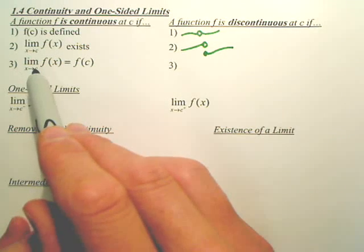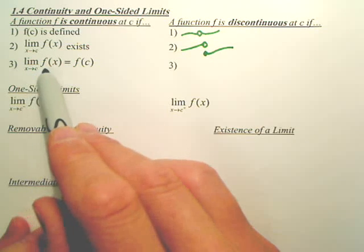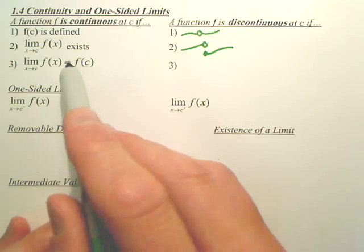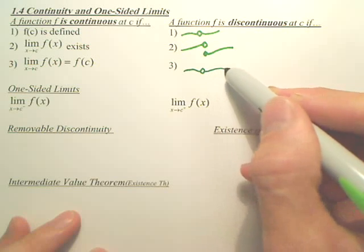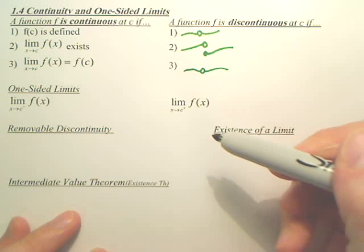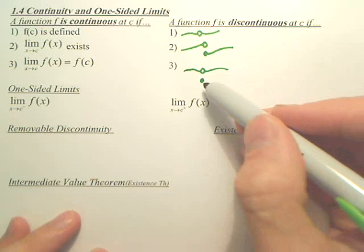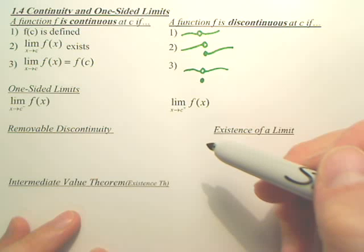The third stipulation for it to be continuous is that the limit as x approaches C equals the actual value, meaning this. Does the limit exist? Yeah. But if the value is down there, does the value equal the limit? No.